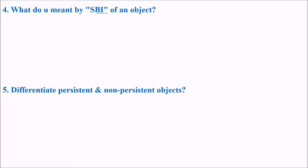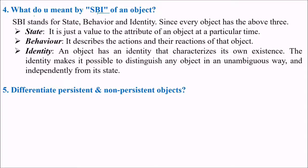What do you mean by SBI of an object? SBI is State, Behavior and Identity. SBI stands for State, Behavior and Identity. And every object has these three.